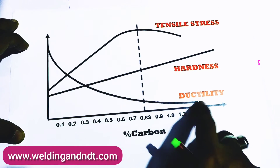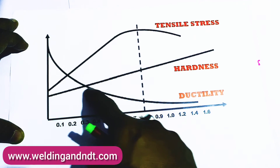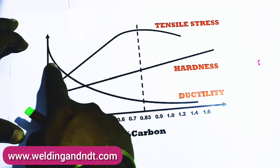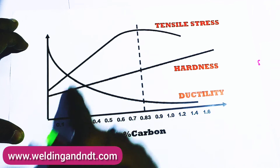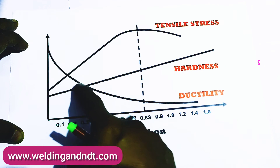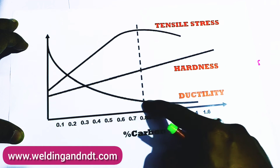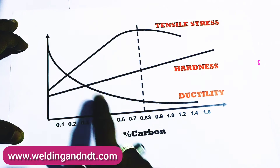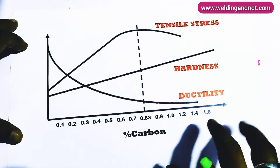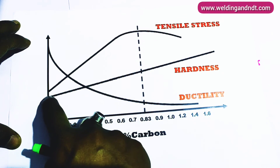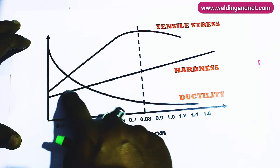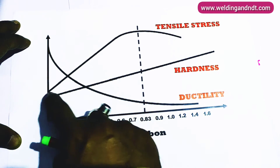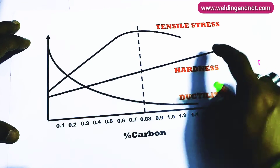First, this line represents ductility. Here you can see that ductility is decreasing as carbon is increasing. Hence, with the increase of carbon ductility decreases. Now we will see hardness — here hardness is getting increased gradually. So with the increase in percentage of carbon, hardness increases.